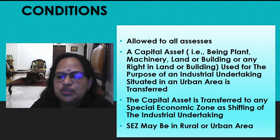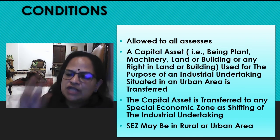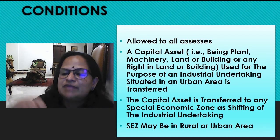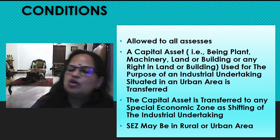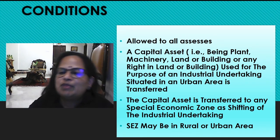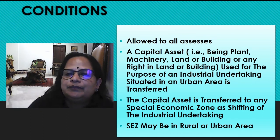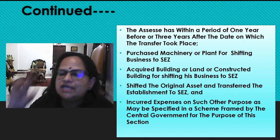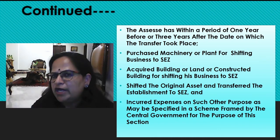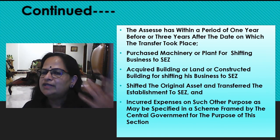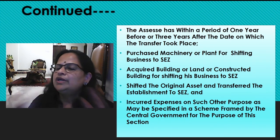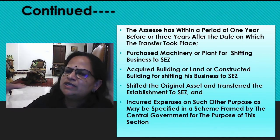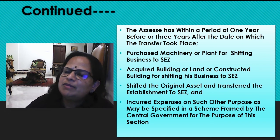The capital asset is transferred to any special economic zone as shifting of the industrial undertaking. The special economic zone can be in rural area or urban area, because from urban area you are shifting. Sometimes it is developed in urban area, sometimes in rural area — because government wants to introduce and promote the rural area concept. The SSC has within a period of one year before or three years after the date on which transfer took place. Section 54G also has the same condition: one year before or three years after. If they have decided they are moving into a special economic zone, one year before itself they can decide, do the initial investment, and start the process.